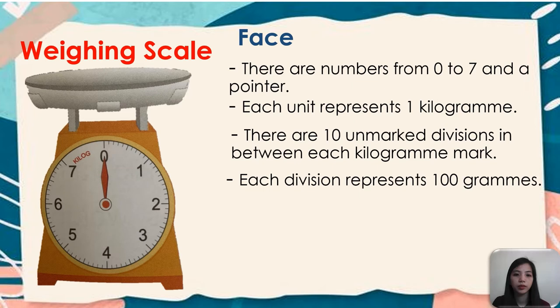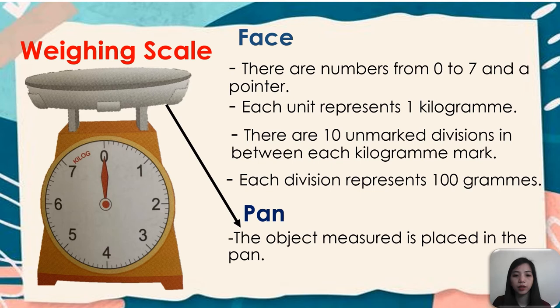So another part of a spring scale, we have pan. So the object measured is placed in the pan. So we need to put the object we want to measure here for us to know how heavy or light it is. Let's have an example.